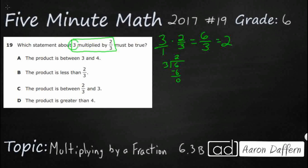So take a look at this — we multiplied a fraction by 3, and we actually came up with a smaller product. Here's the interesting thing about multiplying by fractions that are between 0 and 1: when you multiply by a fraction between 0 and 1, your product actually gets smaller. So we are looking for the answer where 2 would fit. The product is between 2 thirds and 3, which is answer choice C.